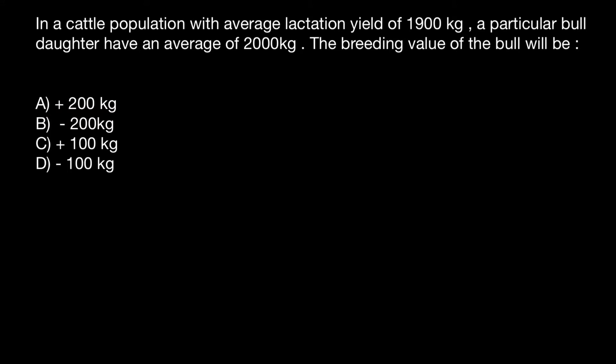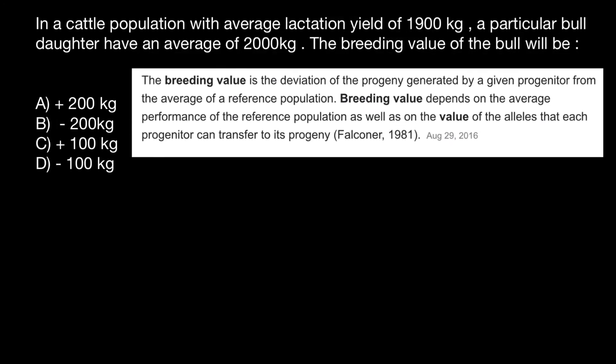In order to answer this question, I have prepared a couple of citations for you. Here's the first one: the breeding value is a deviation of the progeny generated by a given progenitor from the average of the reference population. After reading this citation, many of you would choose answer C, because the difference would be 100 kilograms.